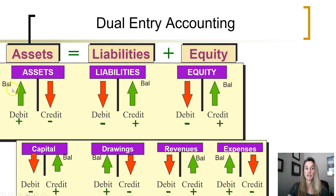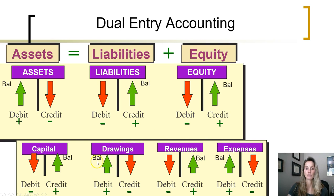Assets have a debit balance — to increase, we debit. Liabilities have a credit balance — to increase, we credit. Owner's capital and revenues have credit balances — to increase owner's capital and revenues, we credit. Drawings and expenses have debit balances — to increase, we debit.